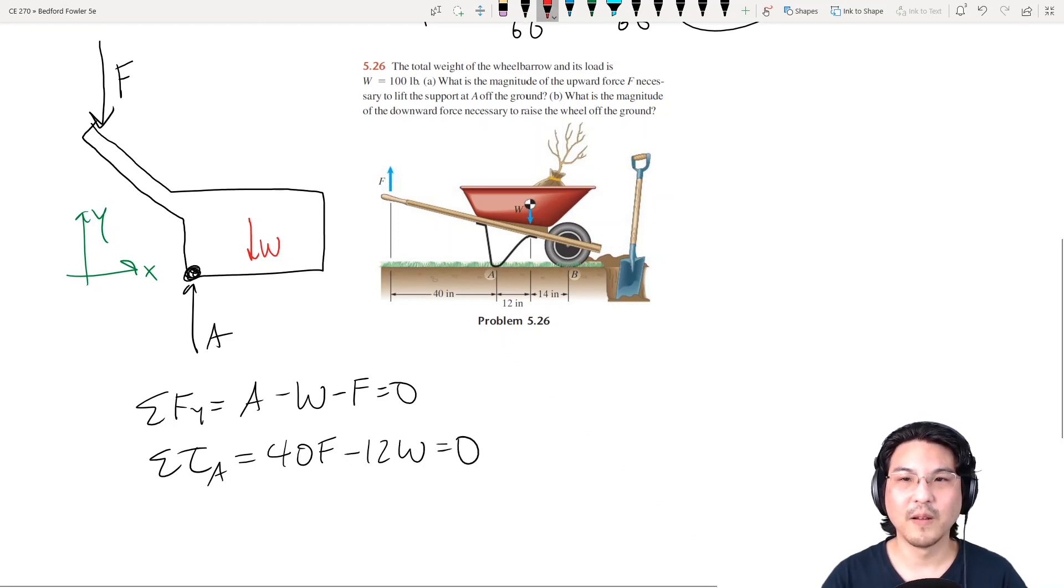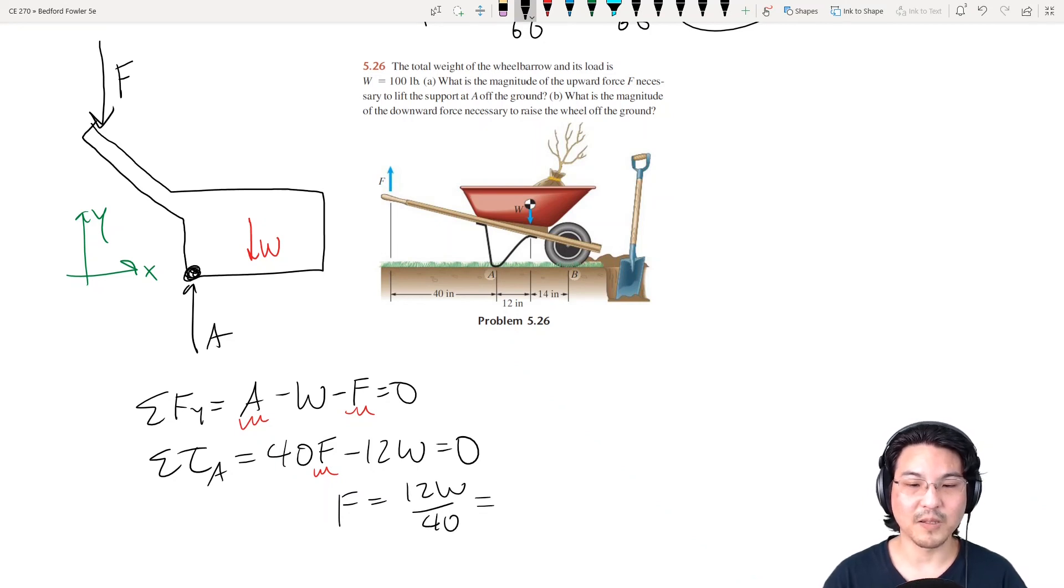Okay, let's solve. These are my unknowns. Solve for F. W was 100, right? Okay, so that's 30.